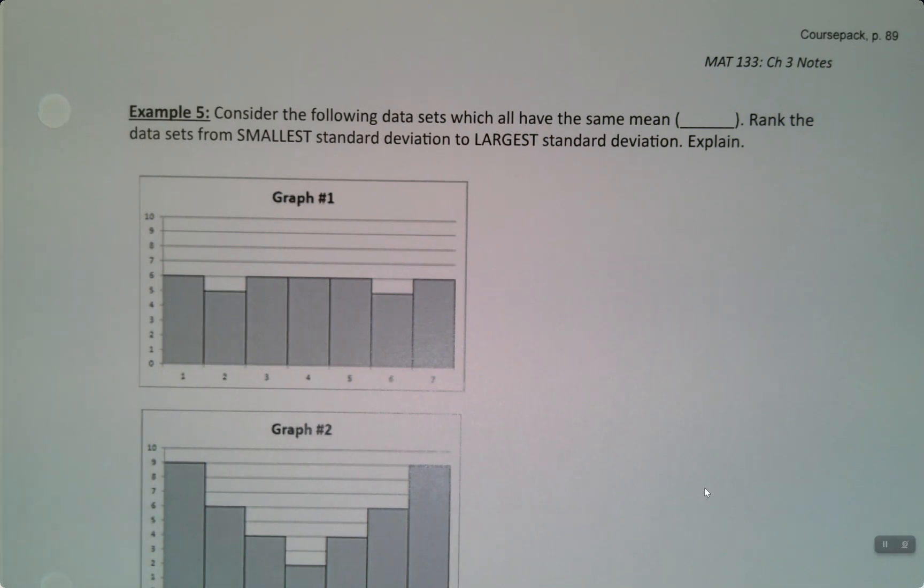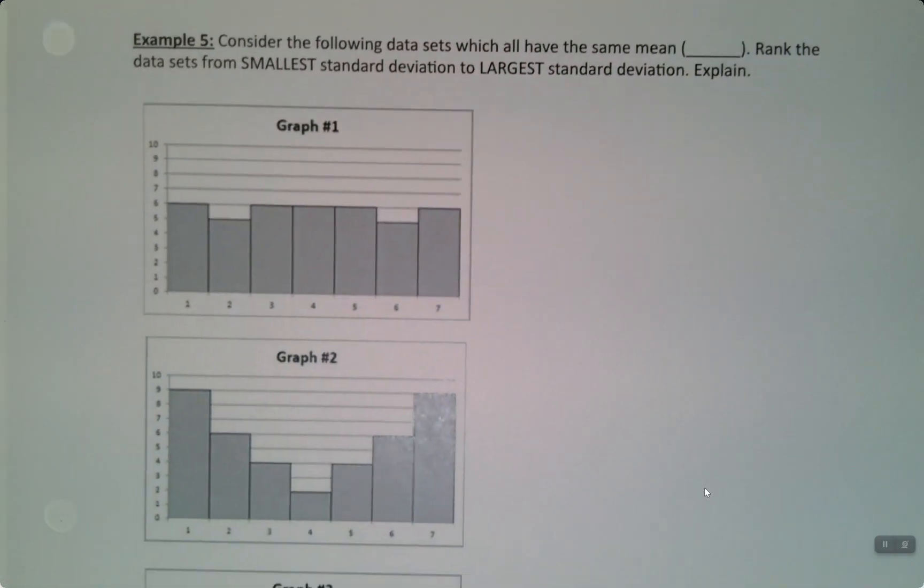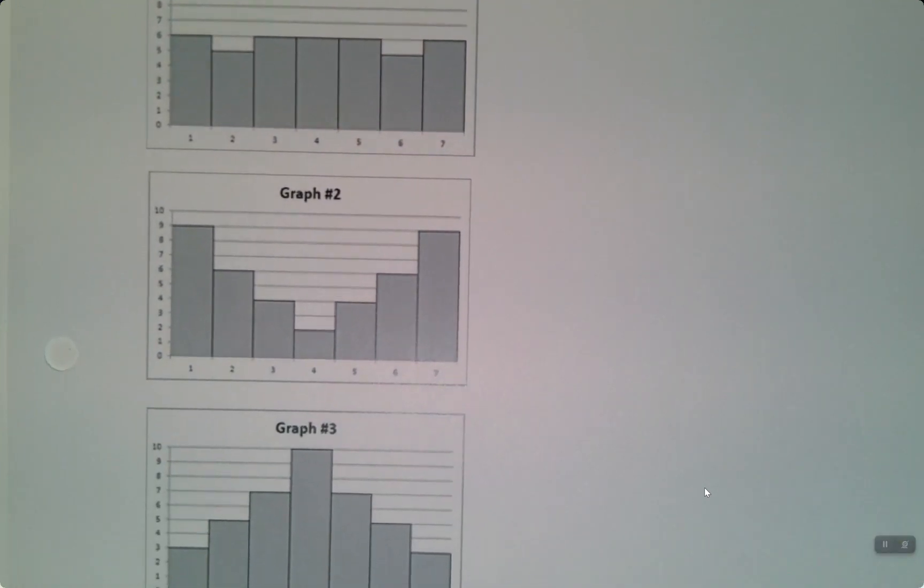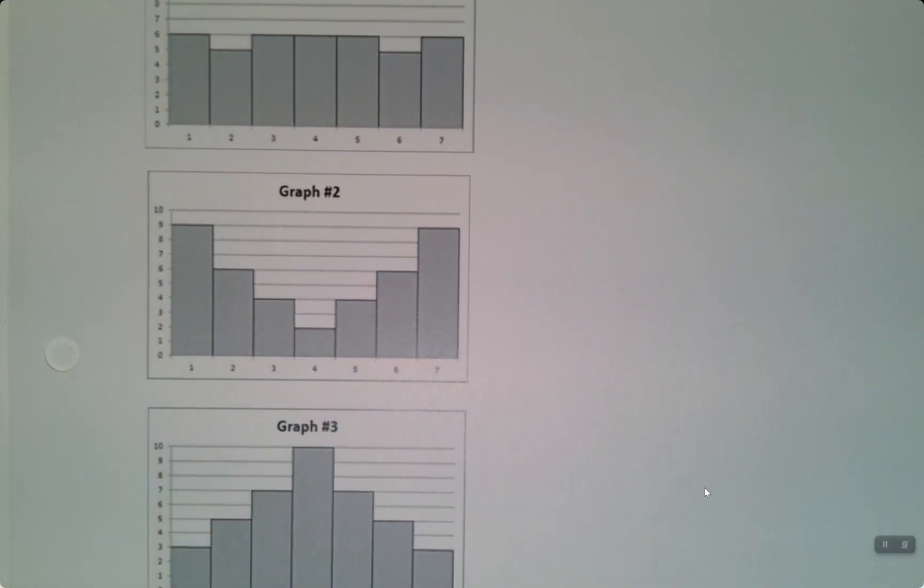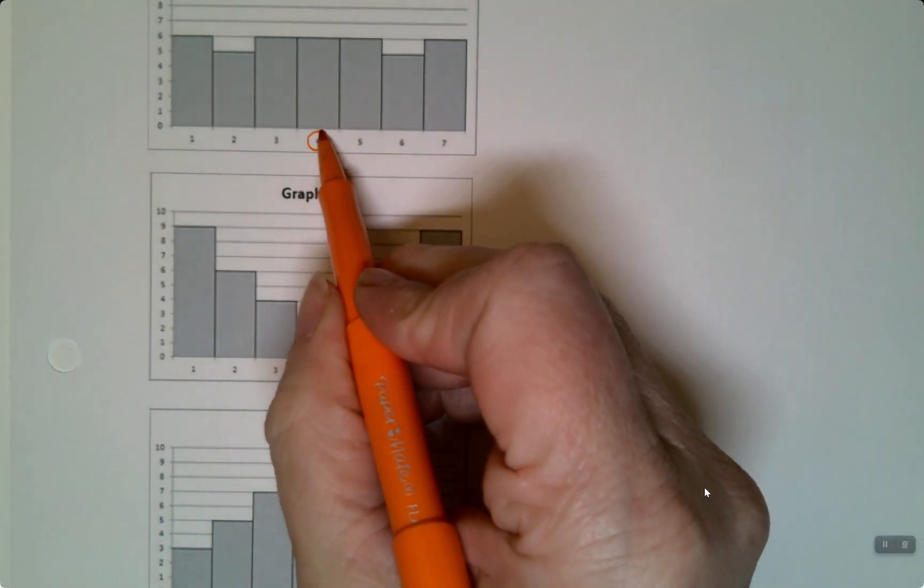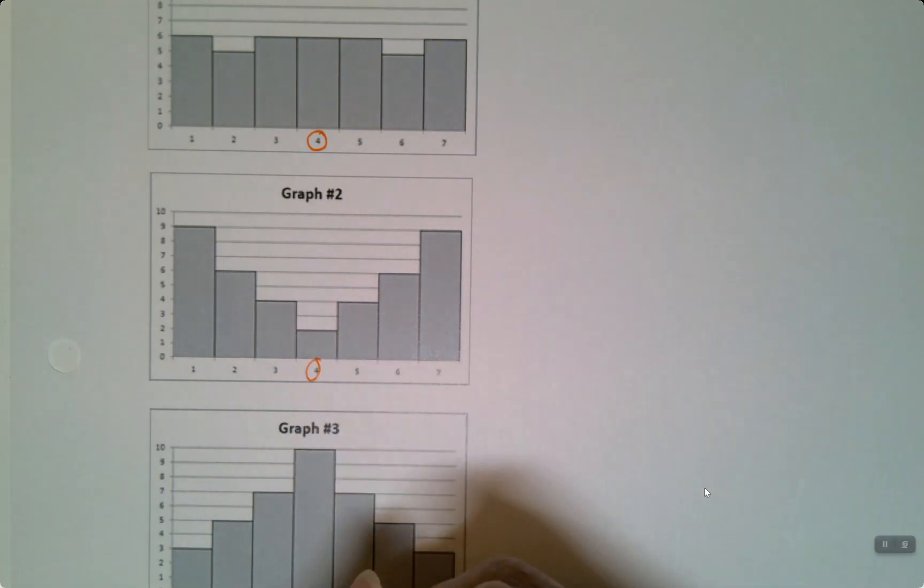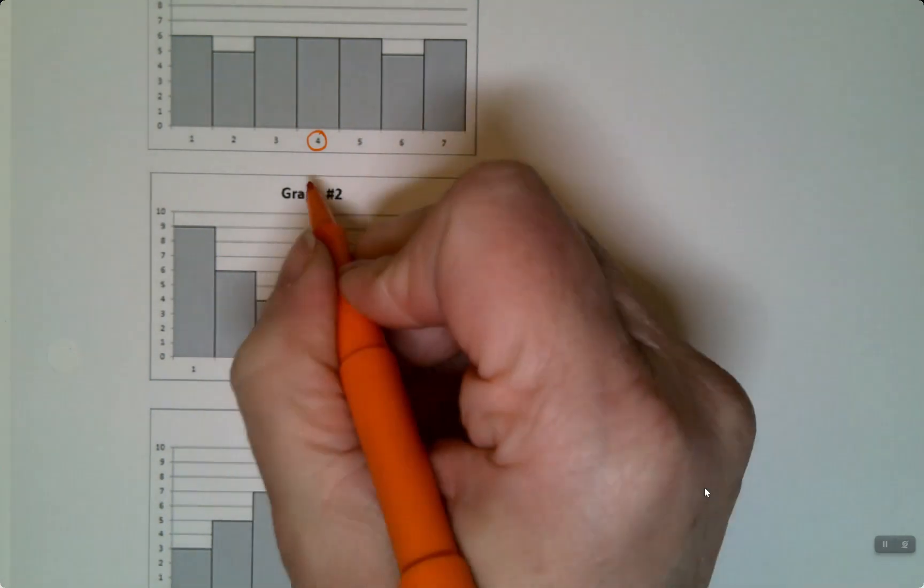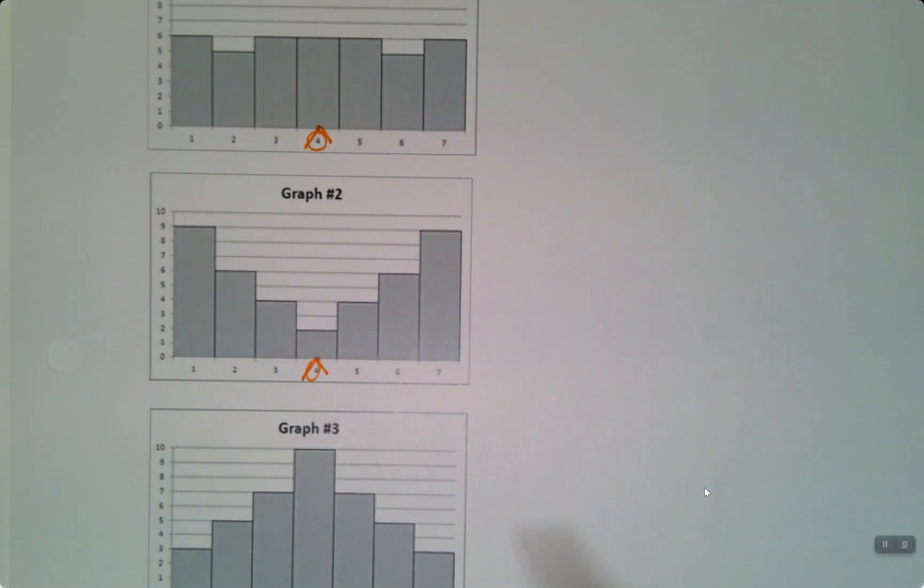Consider the following data sets, which all have the same mean. And you can kind of tell by looking at it. Look at the graphs. They're all centered around four. Four is the center. Four is the middle for every one of these graphs. So, they're centered at four. That's their mean, their balance point. Center or the middle is four for every graph.